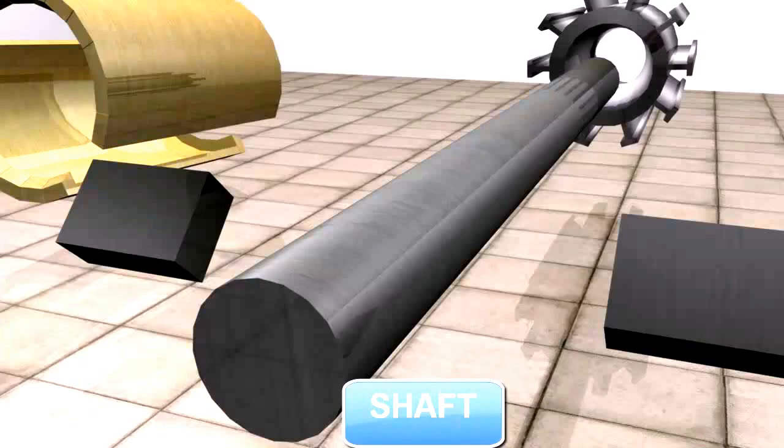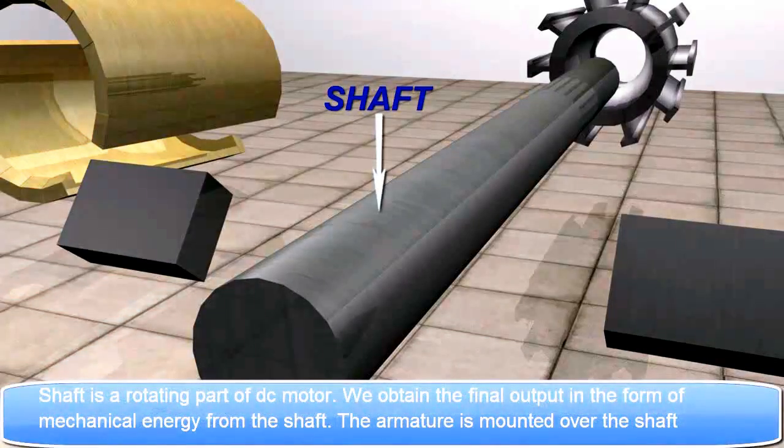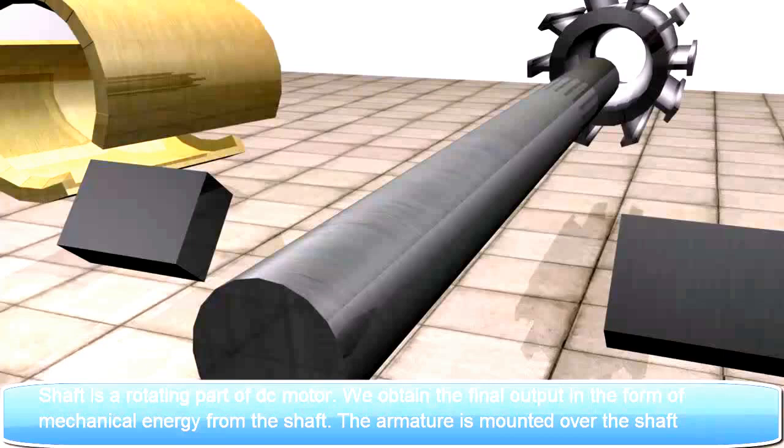Shaft. Shaft is a rotating part of DC motor. We obtain the final output in the form of mechanical energy from the shaft. The armature is mounted over the shaft.